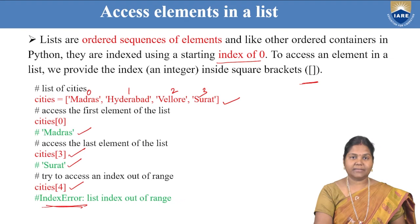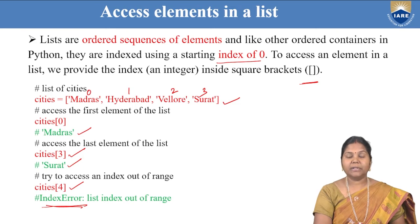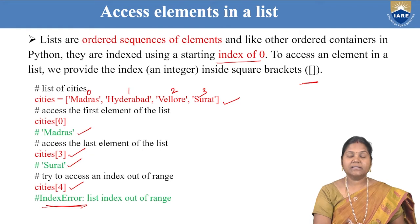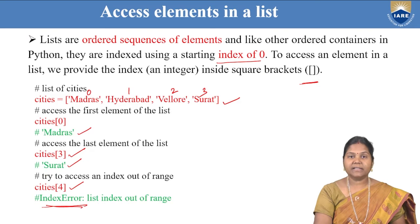Python helps you identify different types of errors — name error, attribute error, value error, index error, and so on. Here the mistake is in terms of an index, so it is called an index error — list index out of range.